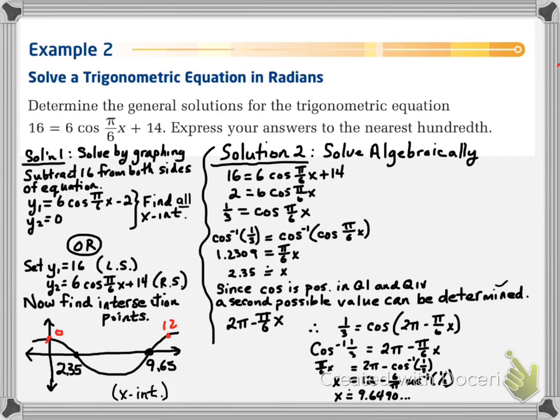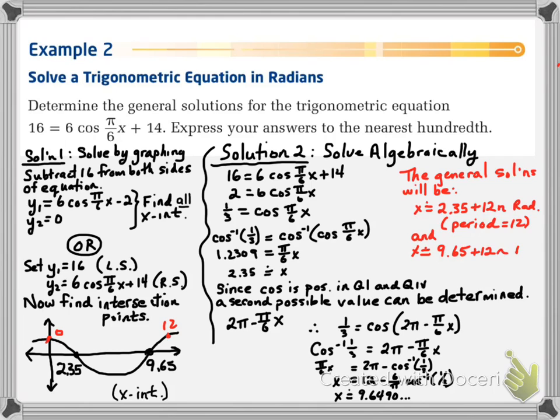Now, all we need to do is figure out the period. The period is 2π divided by b, and b is π/6. So, 2π divided by π/6 gives us a period of 12. So, on our graph, notice in red, the 0, 0 and 12, that's where it starts to repeat. So, now we can give a general solution. And that is that it's going to be 2.35 plus 12n radians, and 9.65 plus 12n radians, where, of course, n is any integer.